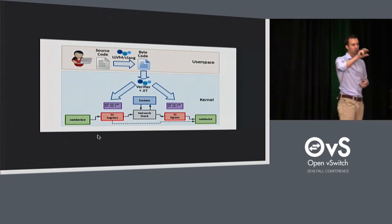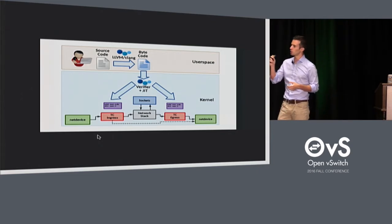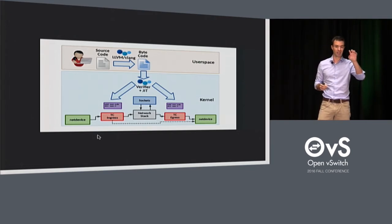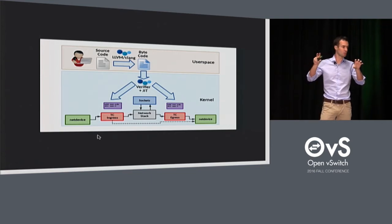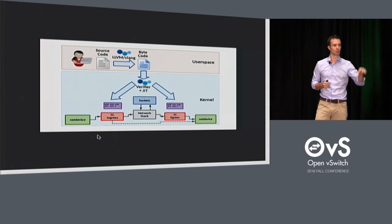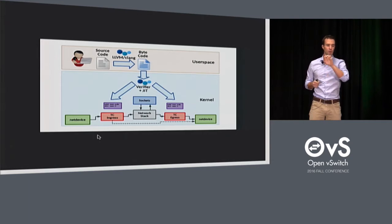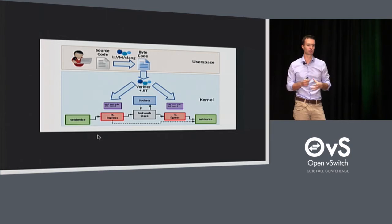Once the bytecode is valid and safe, the kernel will pass it through a just-in-time compiler. The JIT compiler will take the bytecode and translate it into native code — code that your CPU understands. So essentially, although we've gone from pseudo-C through LLVM to bytecode and then through the JIT compiler to native code, we will run natively without any additional overhead, just as if you would compile a Linux kernel module and load it.